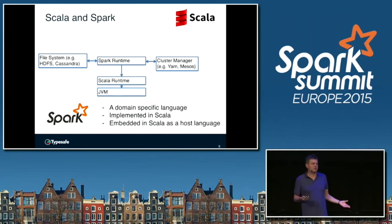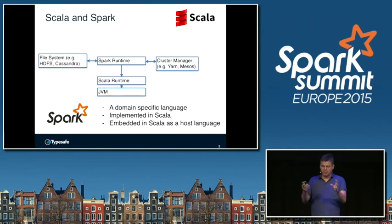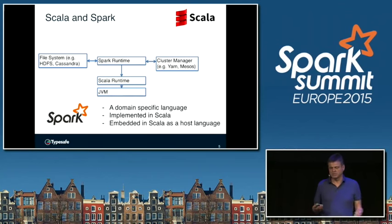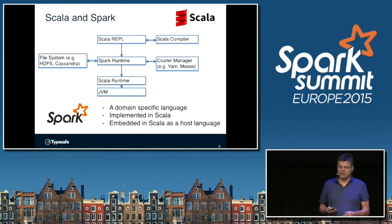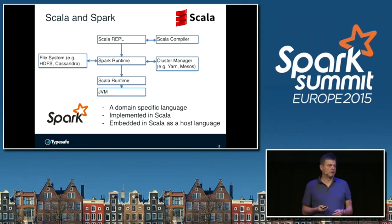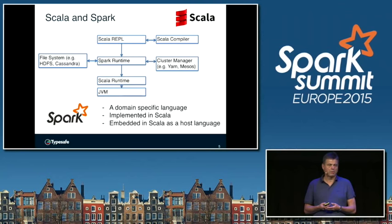Spark is clearly a domain-specific language — a language for data analysis and big data. It's implemented in Scala and embedded in Scala as a host language. The Spark runtime runs on top of the JVM, and in between the JVM and the Spark runtime is the Scala runtime — essentially the standard library, the runtime modules — and then it connects to file systems, cluster managers, and so on. The embedding is really deeper than that, because there's also a layer on top: the REPL. Everyone who uses Spark from Scala uses the REPL to write queries, and that REPL is just the Scala REPL, which in turn needs the services of the Scala compiler.